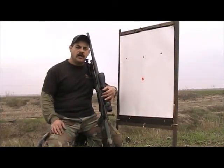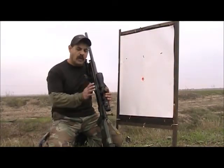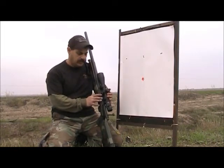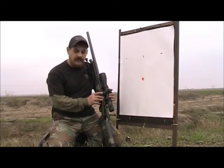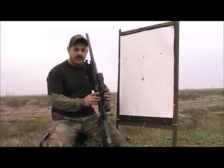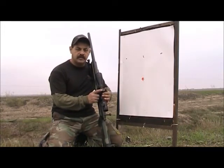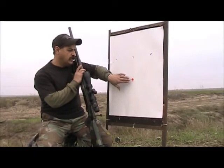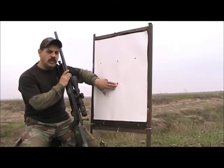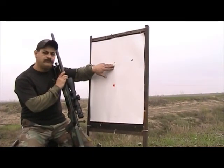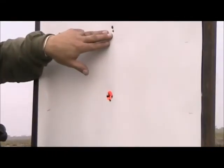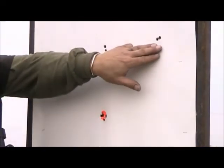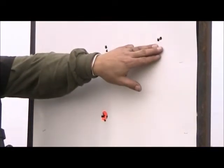We're here at the 100-yard range doing the tracking test for the Vortex Viper PST 4x16x50 objective. It does come with MRADs. We shot a three-round group at the dot, then we went two MRADs up and shot two rounds, then went two MRADs to the right and shot two rounds.